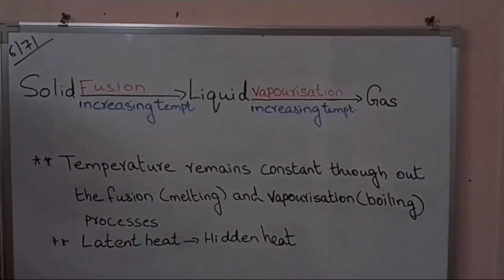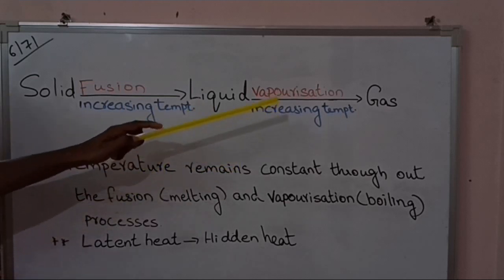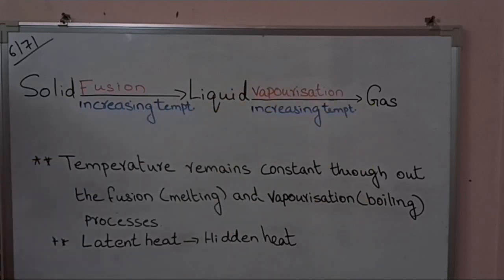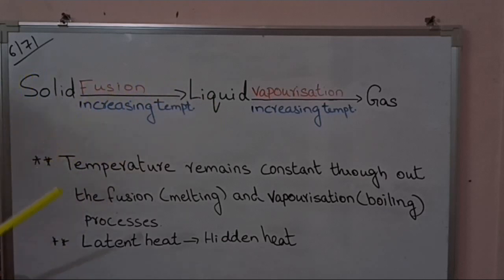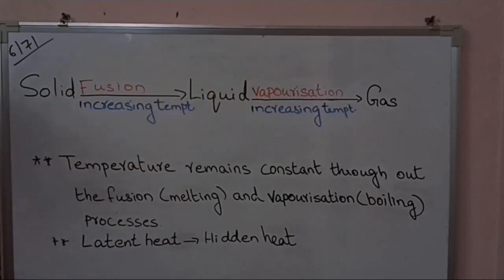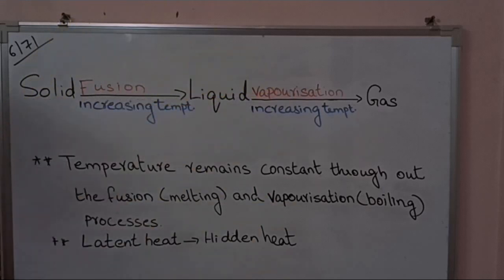In our previous class we had seen the interconversion of states of matter — the conversion of solid to liquid and liquid to gas. The process of converting a solid to liquid is called fusion, done by increasing the temperature. On further increasing the temperature of a liquid, it is converted to gas, and that process is called vaporization. The temperature remains constant throughout the fusion and vaporization processes.